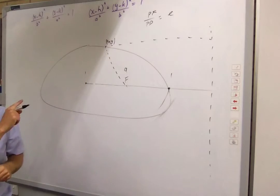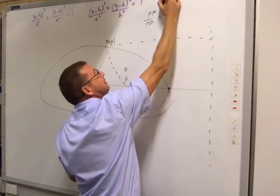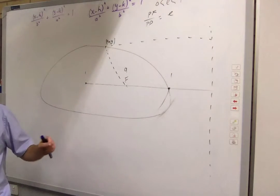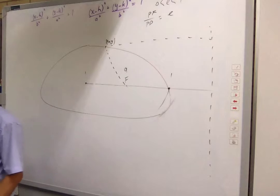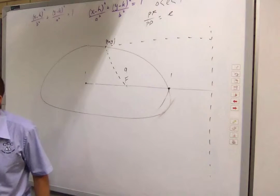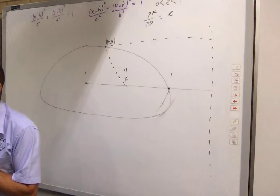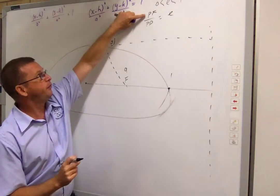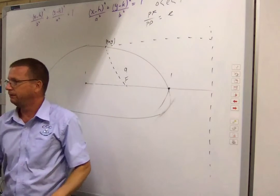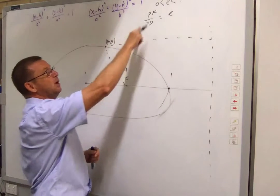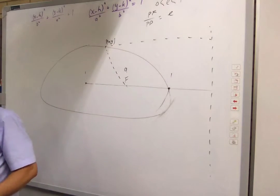So for an ellipse, E is between zero and one. If it is over one, then it's not an ellipse. If E is one, it's a parabola. When it's less than one, it's an ellipse. And when it's bigger than one, it's tomorrow's lesson.